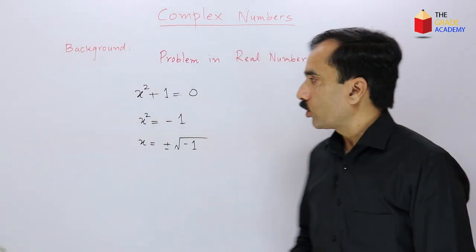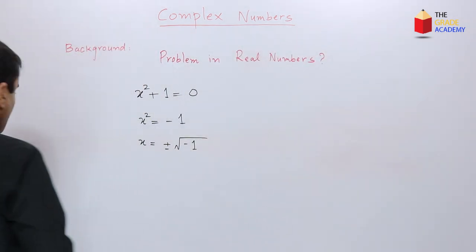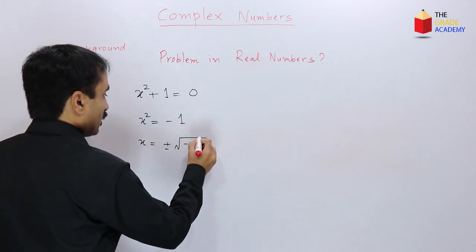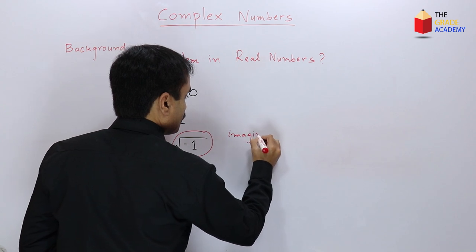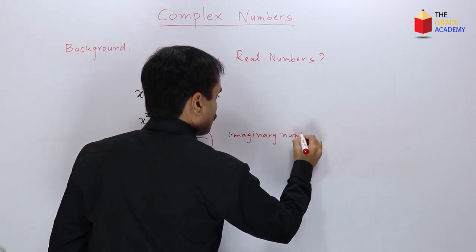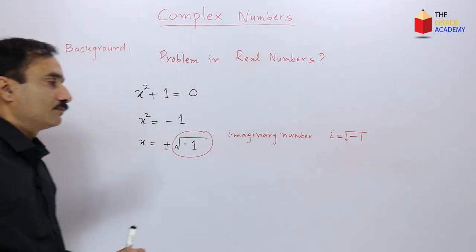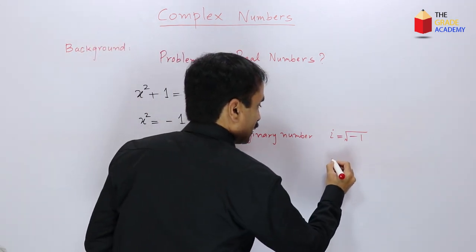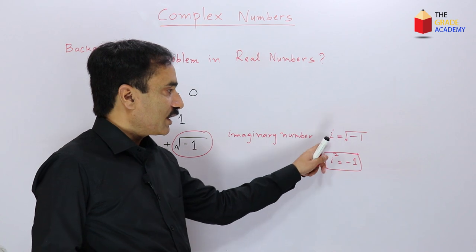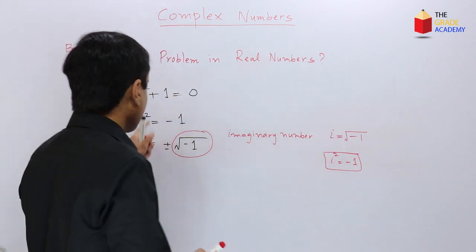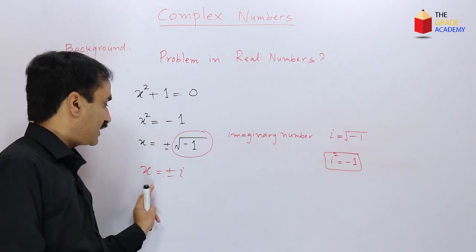To overcome this problem, mathematicians introduced the concept of imaginary numbers. They called this an imaginary number represented by i, where i equals the square root of negative 1. This is a number whose square is equal to negative 1, and it is called the unit imaginary number. So the solution of the equation x² + 1 = 0 is x equals plus or minus i, which is an imaginary number.